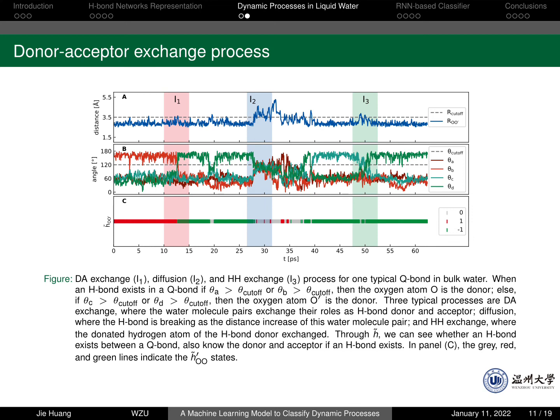In the third interval, we notice that the donor-acceptor relationship does not change because the h-tilde value keeps at minus 1 for most of the time. We can tell what has really happened from the angle charts. We see that the donor water is donating its other hydrogen to the acceptor. The exchange process has drawn a lot of attention on water dimers bounded on a metal surface or some small water clusters.